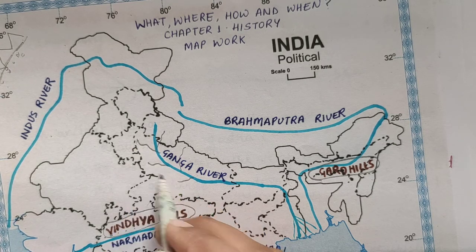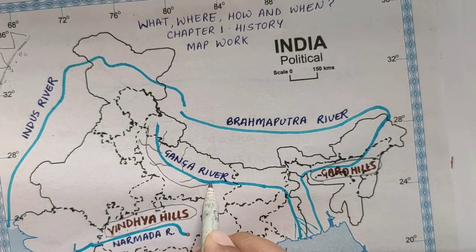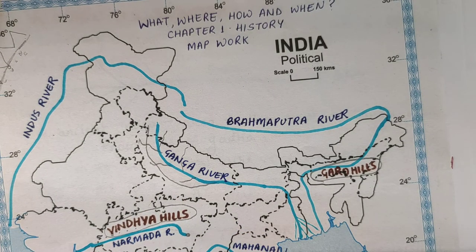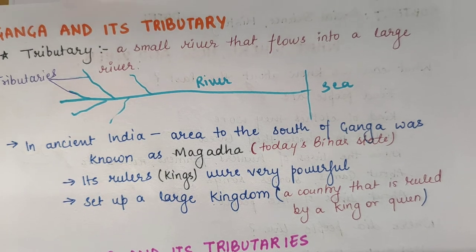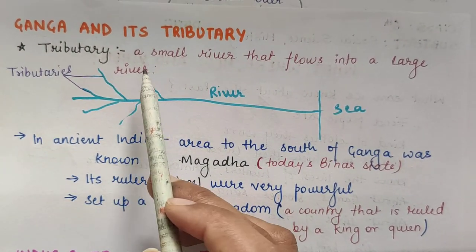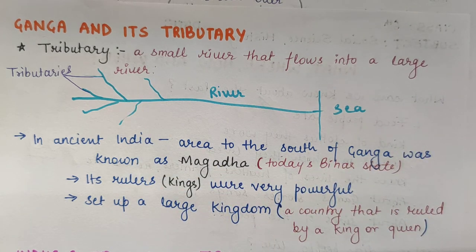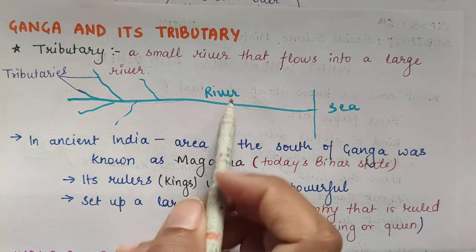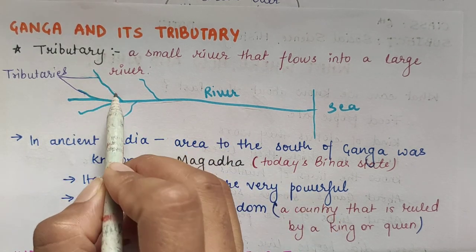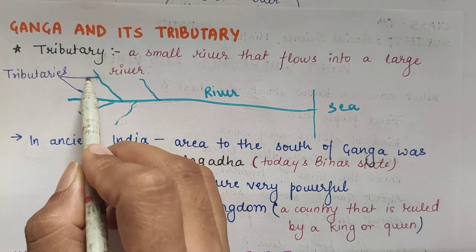Yamuna is also a tributary of Ganga. A tributary is a small river that flows into a large river. Imagine this is a large main river and these are the small rivers joining with it — these are the tributaries. Yehi small rivers jo hoti hain, in ko tributaries bola jata hai.